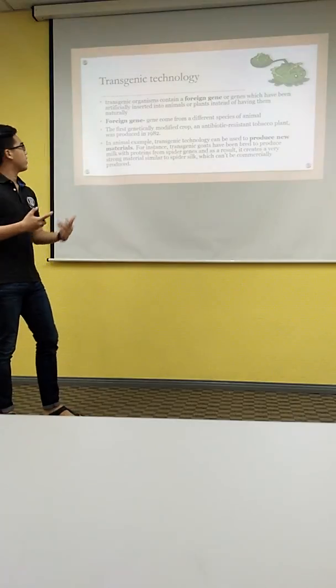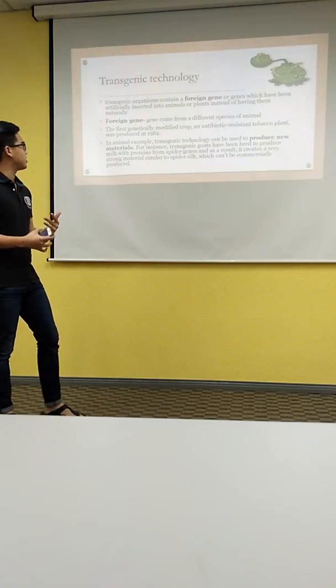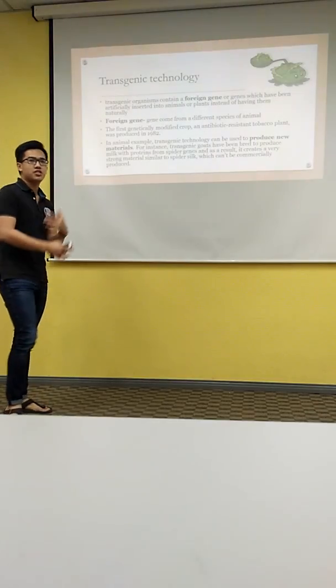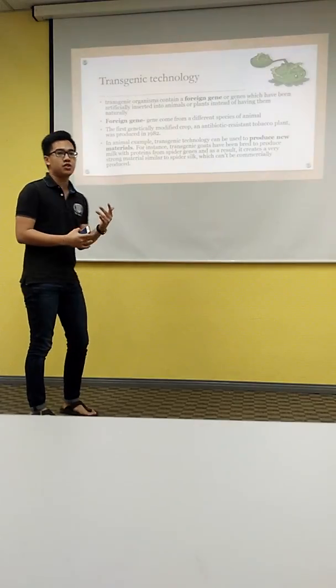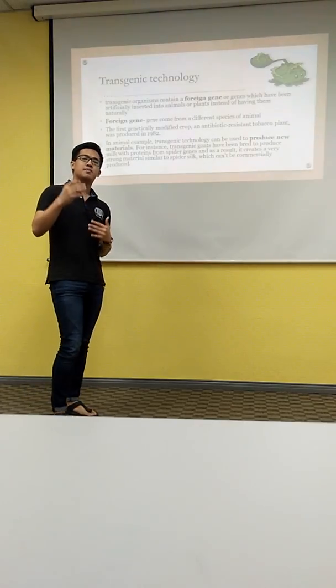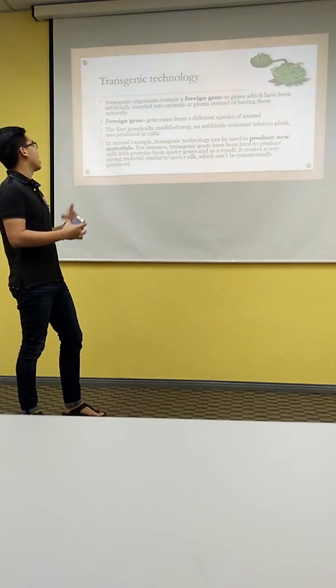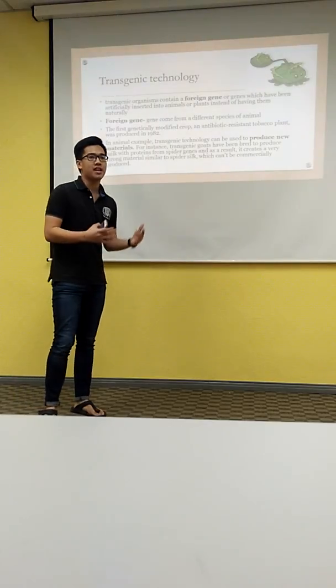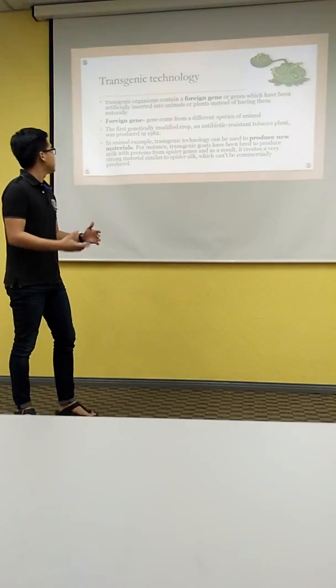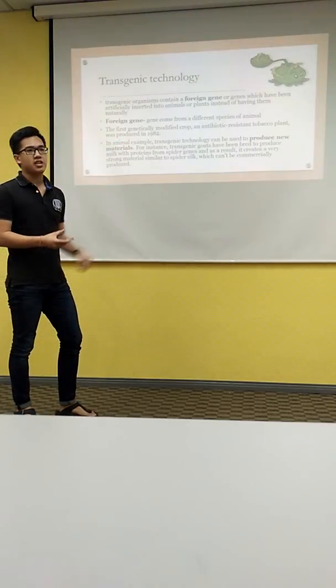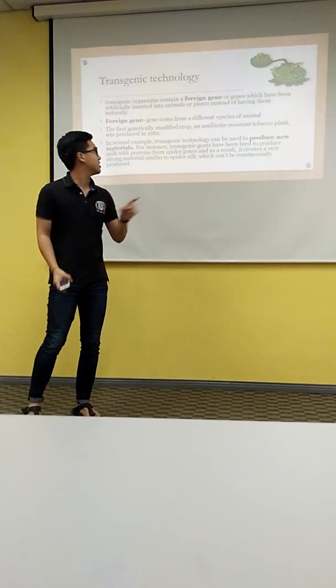I will continue with transgenic technology. What is transgenic technology? Transgenic technology produces a transgenic organism which contains a foreign gene. A foreign gene is a gene which comes from a different species of organism, or genes which have been artificially inserted into animals or plants instead of having them naturally. The first genetically modified crop is an antibiotic-resistant tobacco plant, which was produced in 1982.